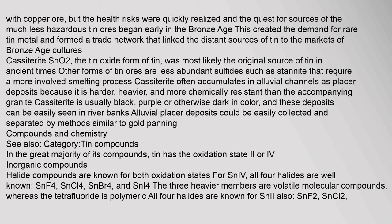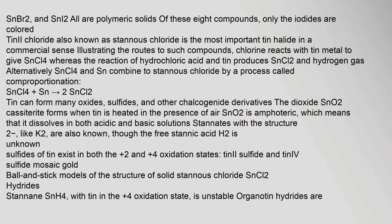In the great majority of its compounds, tin has the oxidation state +2 or +4. Halide compounds are known for both oxidation states. For Sn(IV), all four halides are well known: tin(4) fluoride, tin(4) chloride, tin(4) bromide, and tin(4) iodide — the three heavier members are volatile molecular compounds, whereas the tetrafluoride is polymeric. All four halides are also known for Sn(II): tin(2) fluoride, tin(2) chloride, tin(2) bromide, and tin(2) iodide — all are polymeric solids. Of these eight compounds, only the iodides are colored.